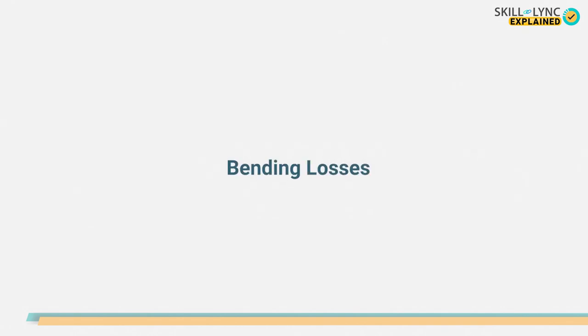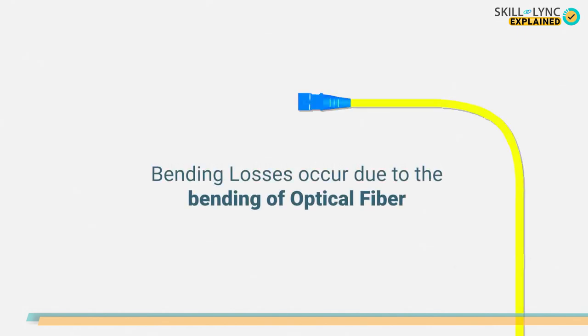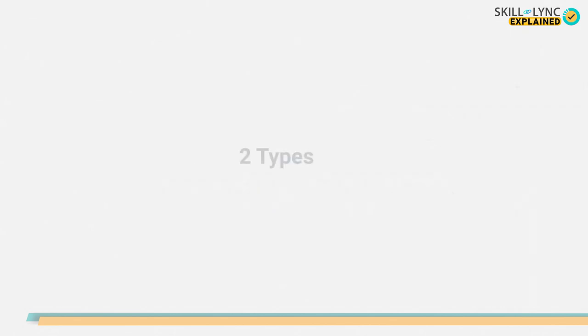Now let us learn about bending losses. Bending losses are also called radiative losses. From the name itself, you would have guessed that bending losses occur due to the bending of the optical fiber. Bending losses are divided into two types.